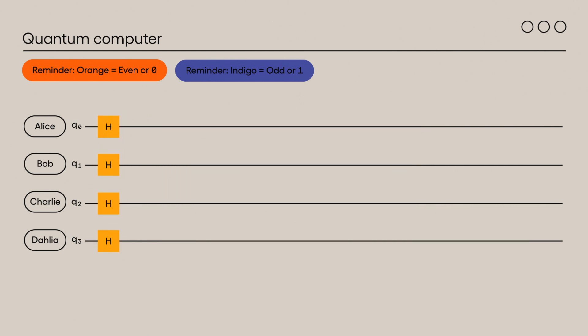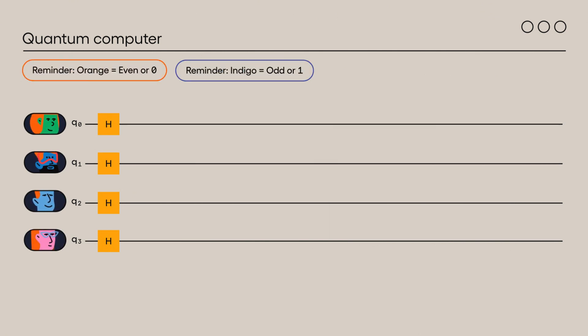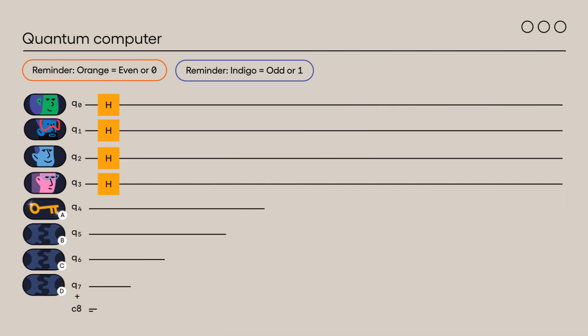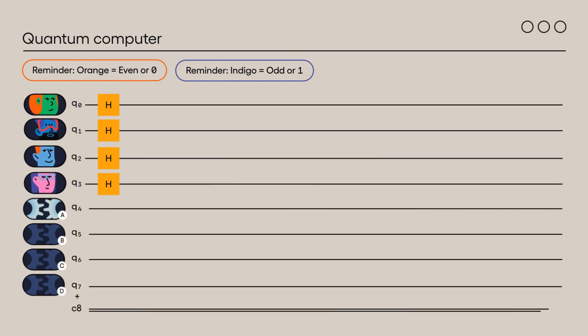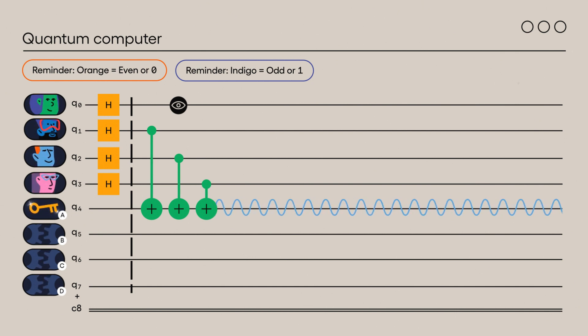Throughout this example, we will say that the zero state corresponds to even or orange, while the one state corresponds to odd or indigo. Let's put a Hadamard gate on qubits zero to three. All the possible hair color combinations coexist in this quantum state. Qubits four to seven represent each of the four thought processes: your own, Bob's, Charlie's, and Dahlia's. You see all three hair colors in front of you, and with the CNOT gates, you calculate if there's an even or odd number of indigo hair colors. Your answer is linked to the state of qubit four.